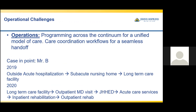First, we needed to address the operational challenges in order to create programming consistent across the continuum for a unified model of care. How treatment and care were more siloed between each care setting was the first challenge to overcome. We needed to ensure there was more consistent communication between the care settings to prevent any patient being lost during the transition of their care. For example, Mr. B did not receive much therapy after the initial onset of his stroke to address his impairment or comorbidities. Unfortunately, this meant very poor consistency in the management of his blood pressure and diabetes and therapy.